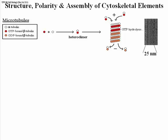Here is an electron micrograph of a microtubule. When you take the measurements, the diameter of this cylinder is 25 nanometers, making it the largest of the three principal cytoskeletal components.